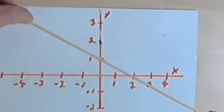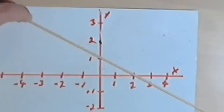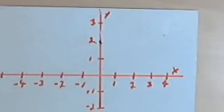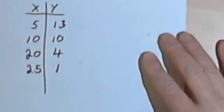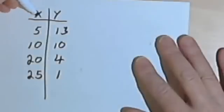So as far as graphs are concerned, all you've got to do is see whether the line is straight, make sure it's not vertical, and then you've got a linear function. Let's go on to tables now. Here I've got a table of values.